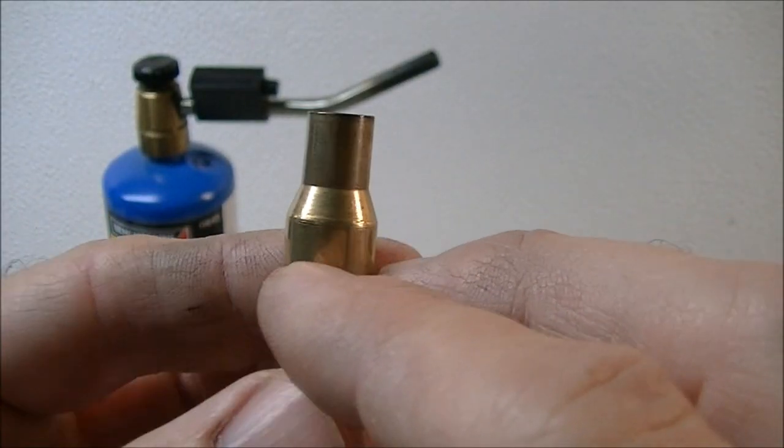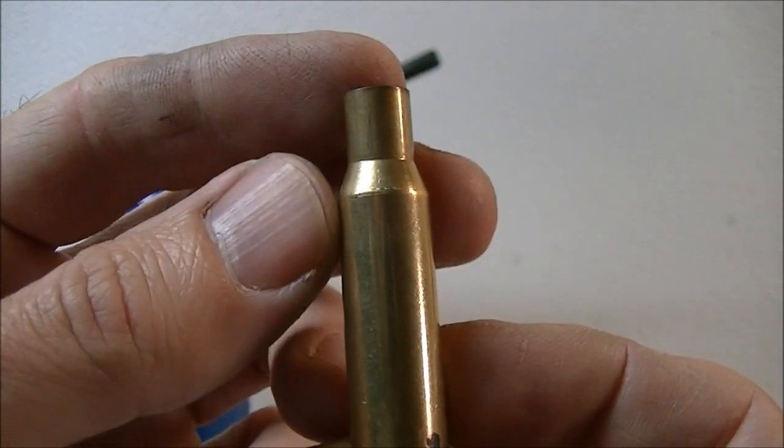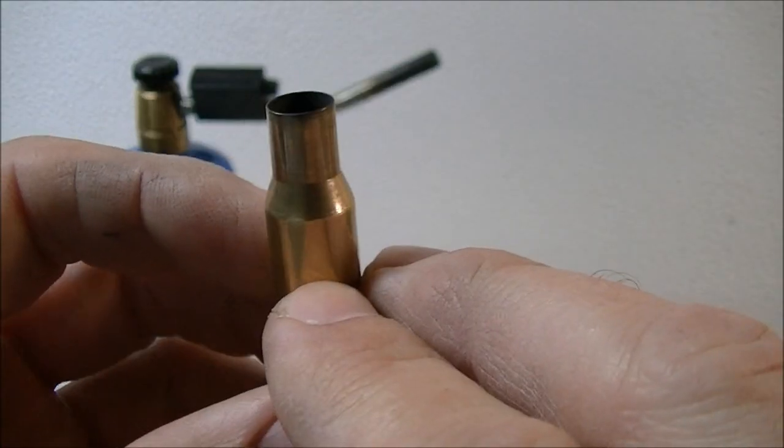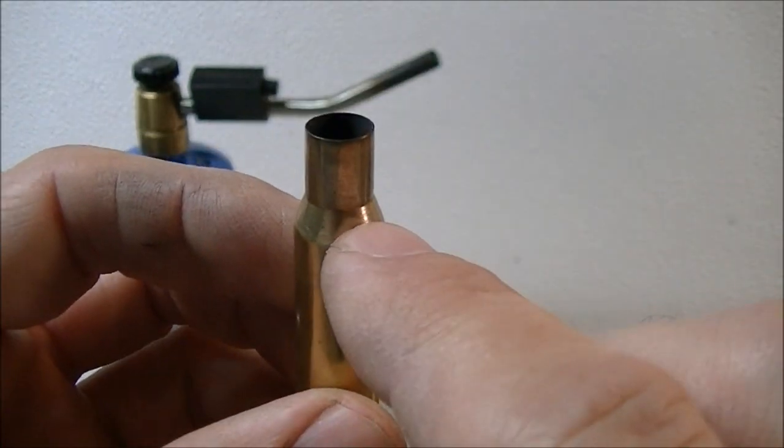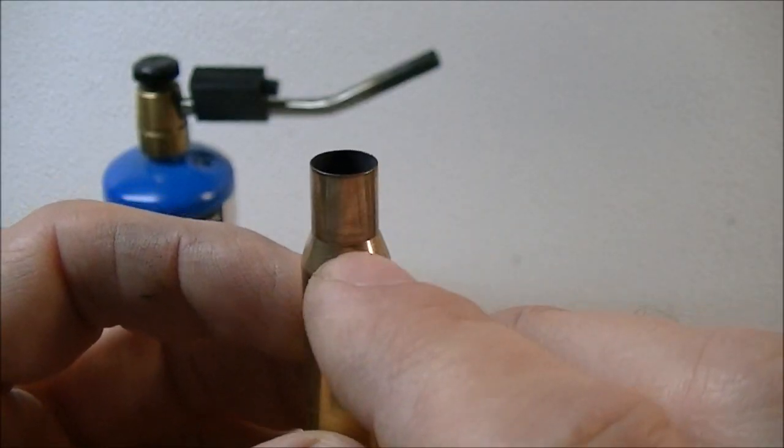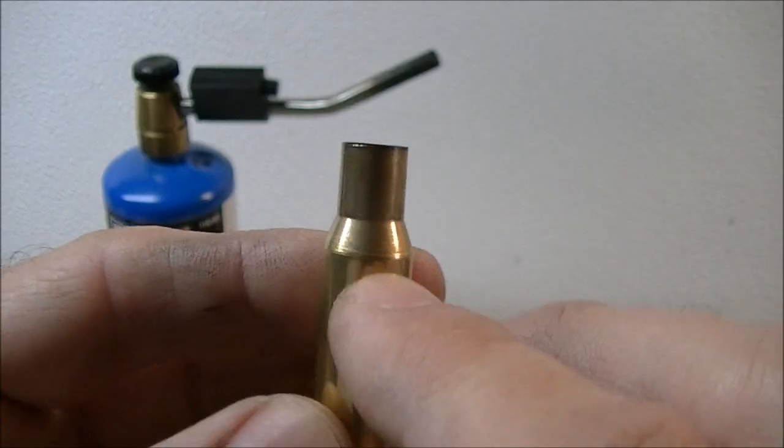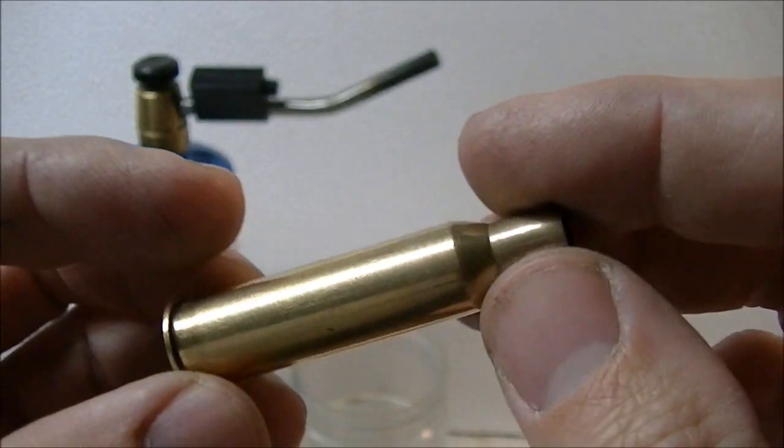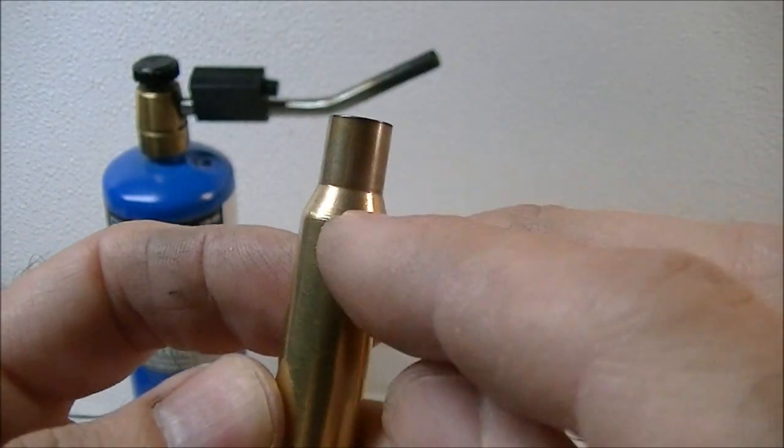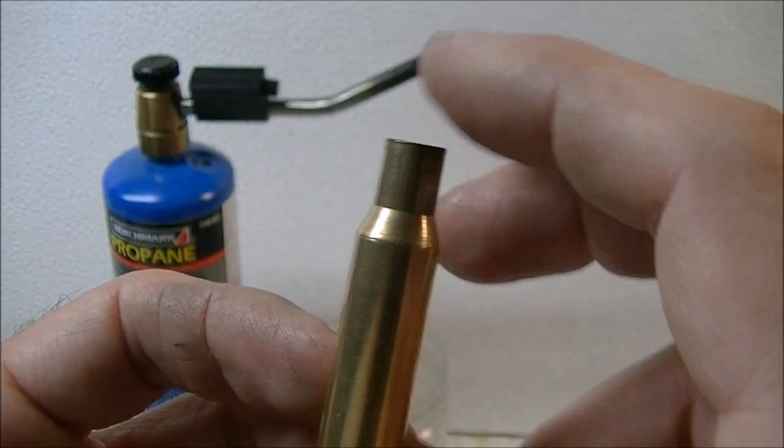The traditional method of doing this involves standing the cartridge cases up in a pan of water, heating them with a torch, and tipping them over. The problem with that is it leaves one side much more heated than the other, so you get a very uneven distribution of heat through this portion of the case. Generally it reduces the case to a dead soft state, which means it's easy to collapse the shoulder when you're reloading it.